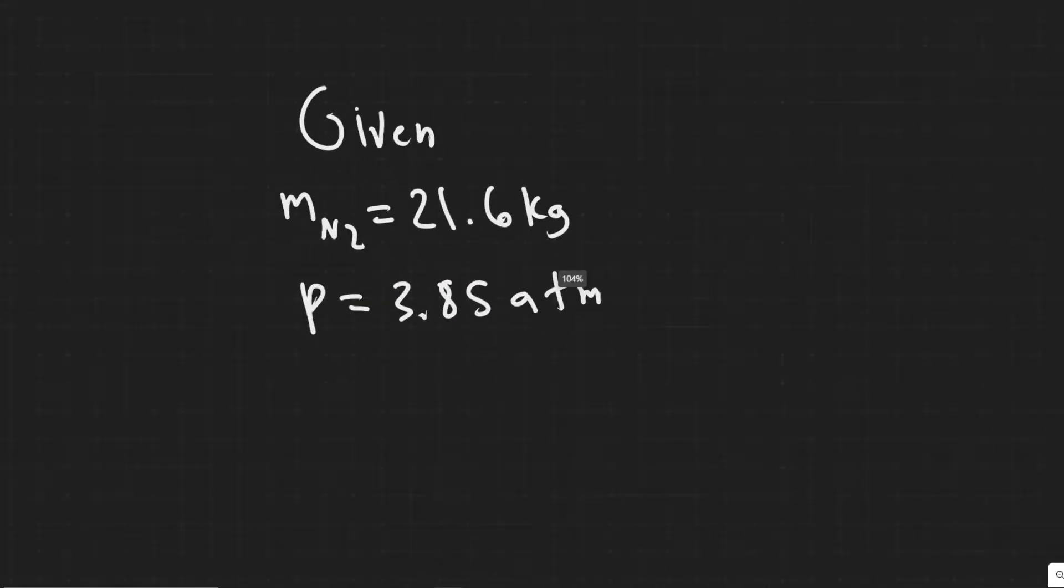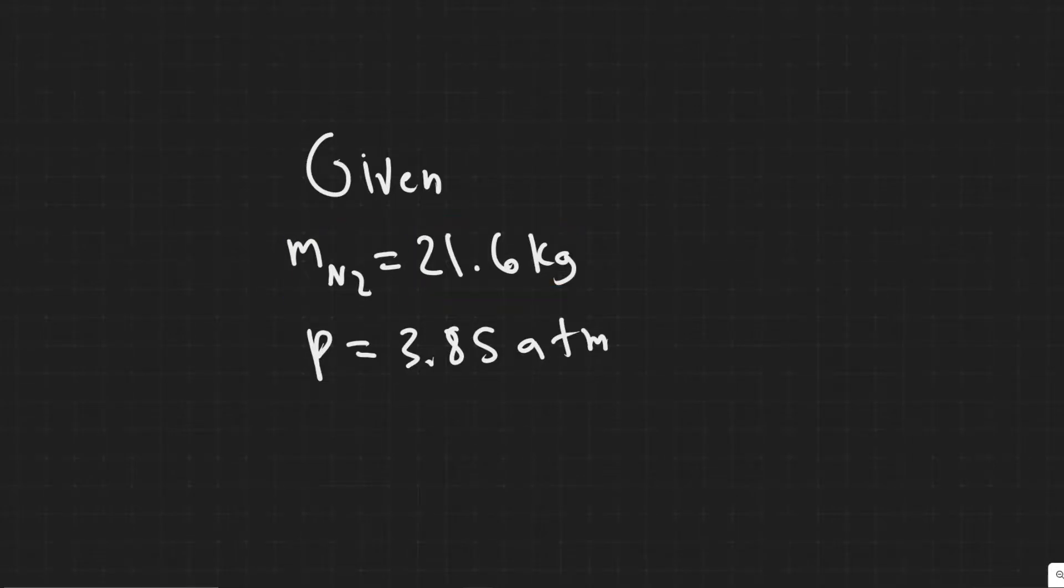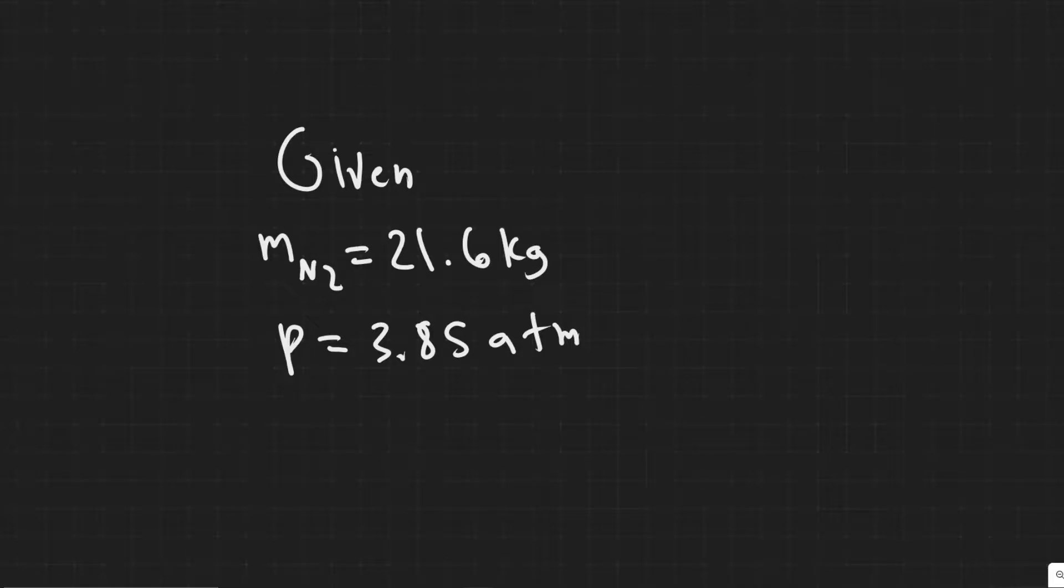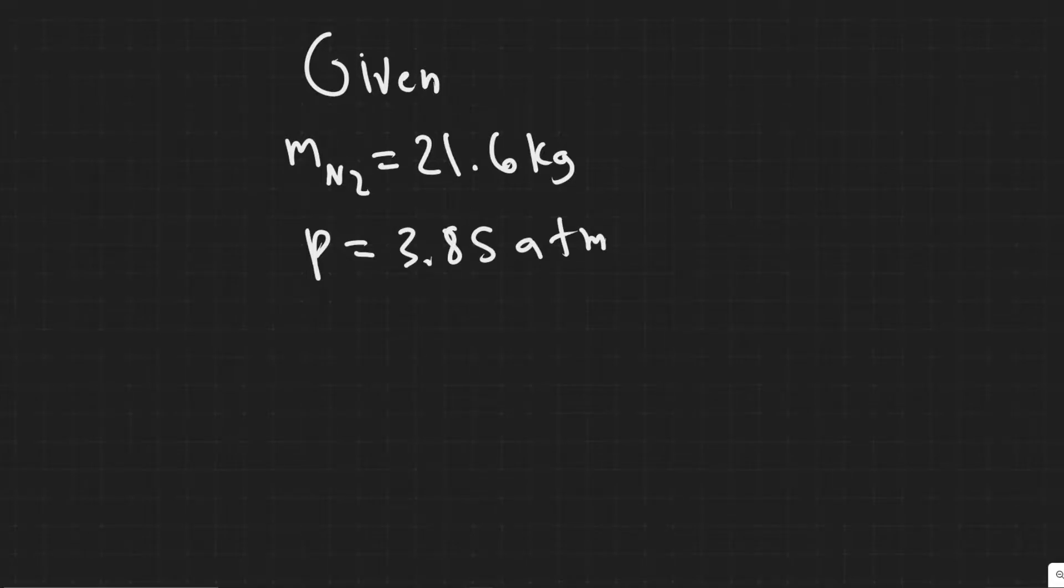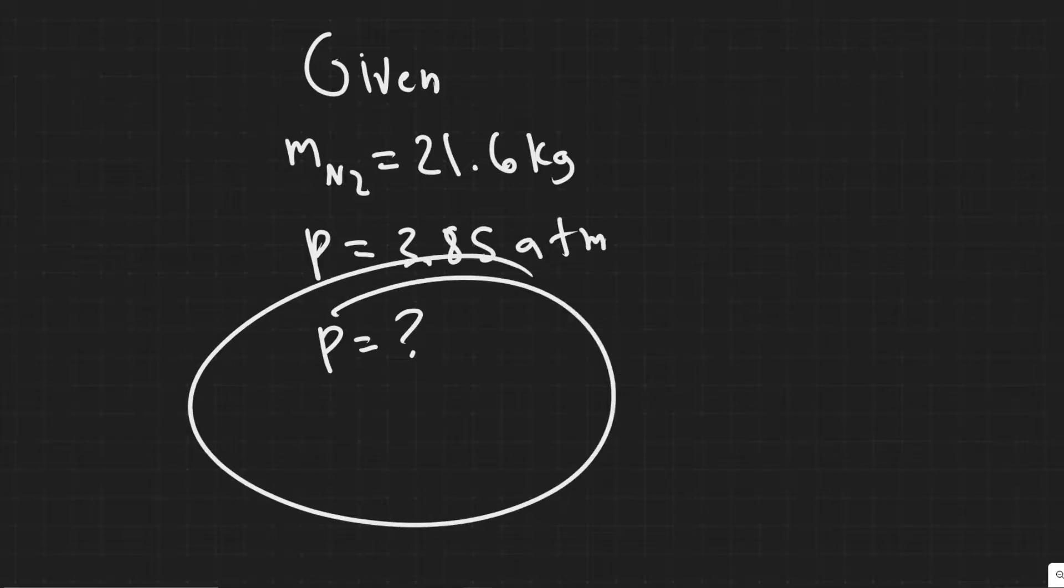So start off with our given. We're given the mass of the nitrogen, N2, that's in the tank, 21.6 kilograms. And we're also given the pressure. What we're trying to find is the new pressure, so we can just say P equals question mark since we're solving for pressure.